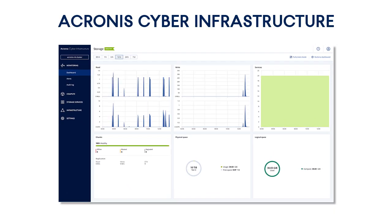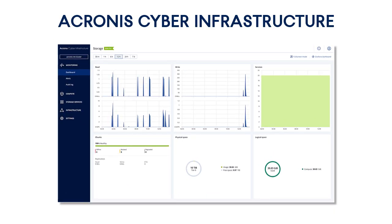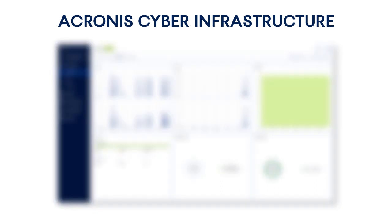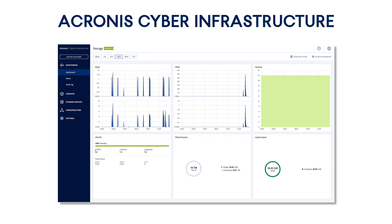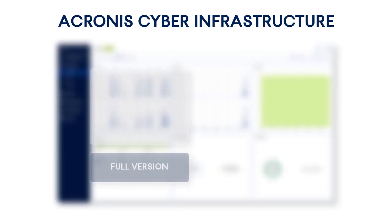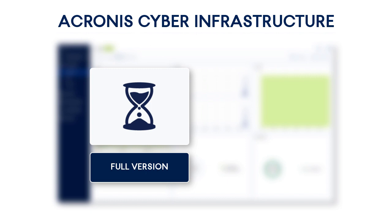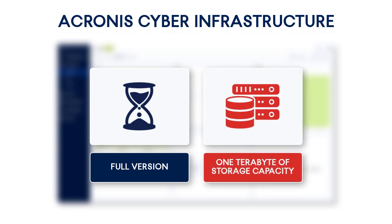That's it with setting up Acronis Backup Storage. Are you excited about the capabilities of Acronis Cyber Infrastructure? You have an opportunity to try our easy, efficient, and secure cyber protection solution right now. Just go to our website at www.acronis.com and download a trial version of Acronis Cyber Infrastructure. Please note the trial version is a full-fledged version with all functionality and no time constraints. The only limitation is that you get one terabyte of storage capacity for storing your customers' data.